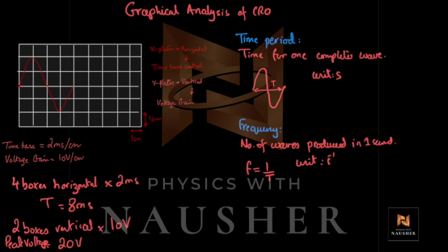They could also ask you to calculate the frequency of this wave. Frequency is 1 divided by time period. Your time period is 8 milliseconds, and since milli is 10 to the power minus 3, you write 1 divided by (8 × 10⁻³). The answer is 125 Hz. That is your frequency.